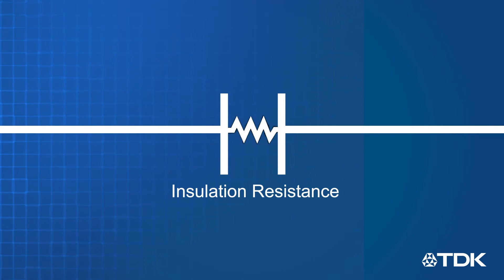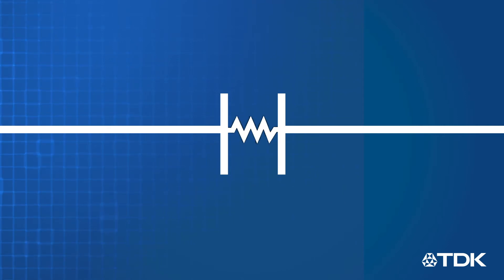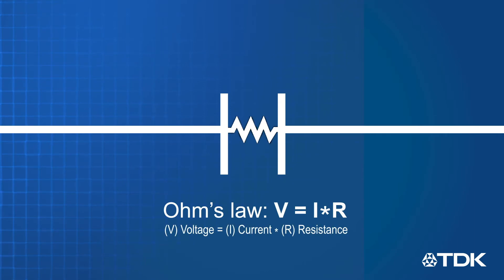IR is determined by measuring the leakage current. Knowing the leakage current and applied voltage, the insulation resistance can be calculated based on Ohm's Law.